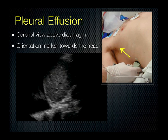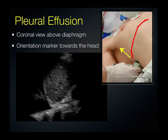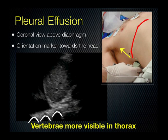Next, we're going to talk about pleural effusions. Here we choose the coronal orientation with the indicator towards the head. We have also chosen the low-frequency probe so we can get a deeper view. Here's the diaphragm. You'd like to place your probe at that interface where the diaphragm separates the thoracic cavity from the abdominal cavity. You can also notice that the vertebrae are more visible in the thorax when there is fluid in the lung, because pleural fluid conducts ultrasound beams but air does not. Structures deep to the fluid are enhanced — this is called posterior acoustic enhancement. If there were air in this lung and no fluid around it, you would not be able to see those vertebral bodies.